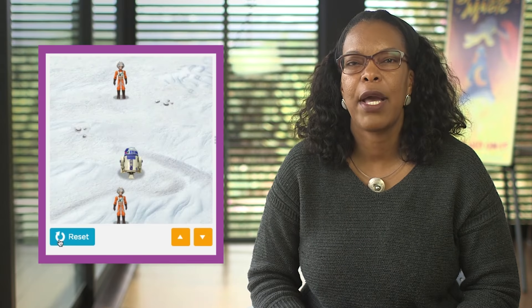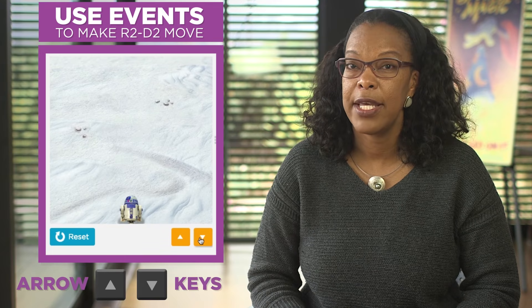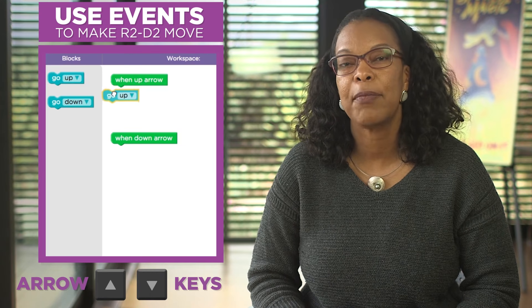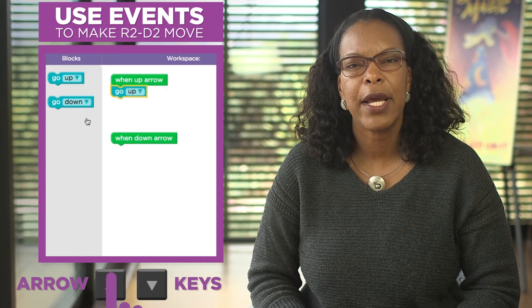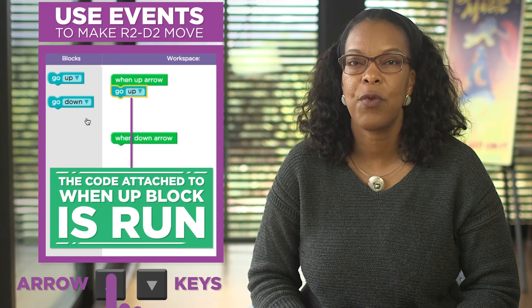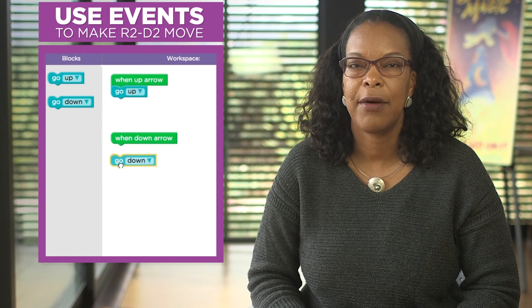We're going to make R2D2 move up to deliver a message to a Rebel pilot, and then move down to the other Rebel pilot. We'll use events to make him move when the player uses the up-down arrow keys or the up-down buttons. We'll use the WinUp Event block and attach the Go Up block to it. When the player presses the Up arrow key, the code attached to the WinUp block is run. And we'll do the same thing to make R2D2 move down.